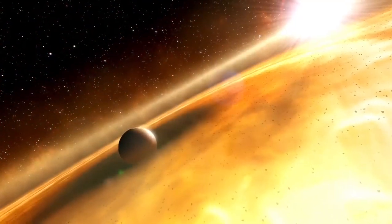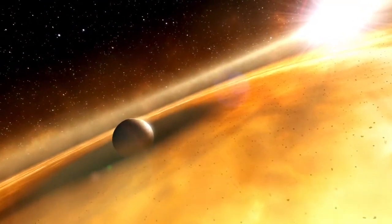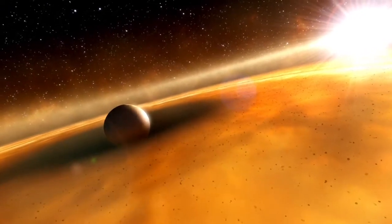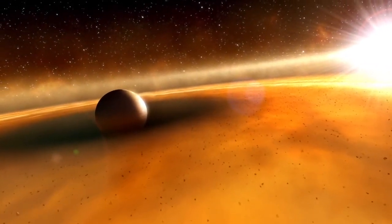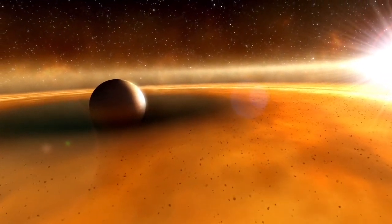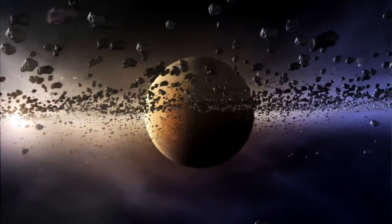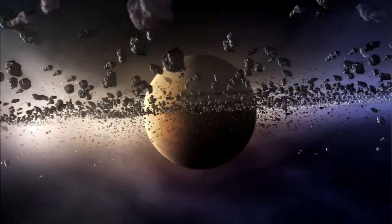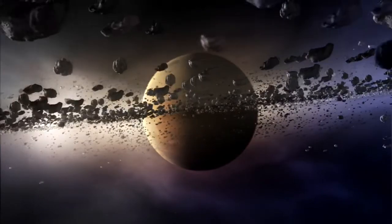Then clues were gathered to paint a picture of this exotic world. The shape of the disk hints that the planet is at most three times the mass of Jupiter. And the observations show that Fomalhaut B is much brighter than expected for an object of its size.